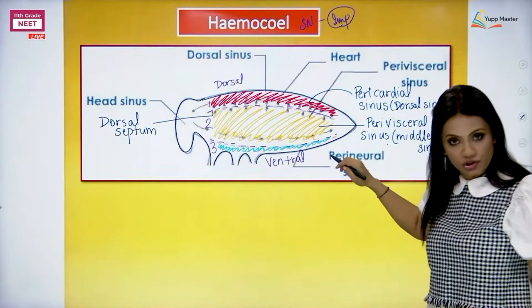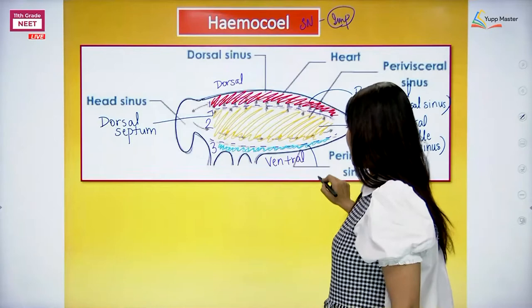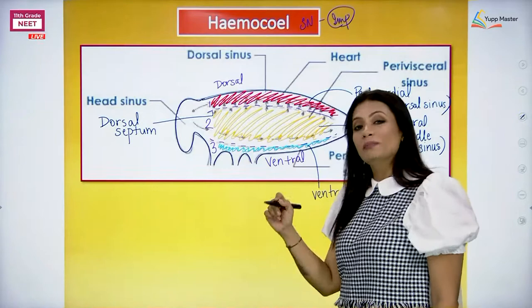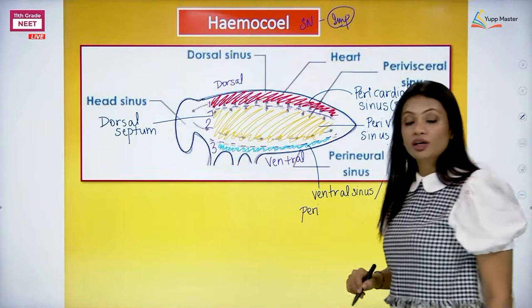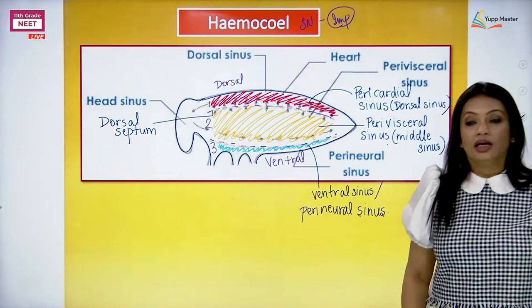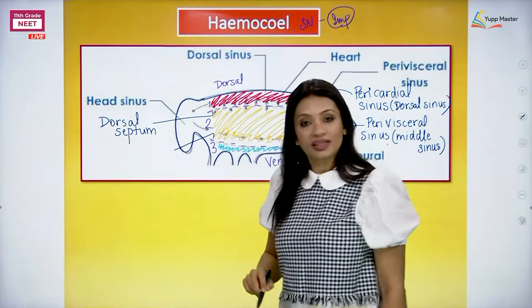In the lowermost ventral region, this is the part where the whole nervous system of the cockroach is going to be lying. Hence this can be called the ventral sinus, or because it is all around the nervous system, it can also be called the perineural sinus - peri meaning all around, and neural meaning nervous system. Between the perivisceral sinus and the perineural sinus there is also a septum called the ventral septum.